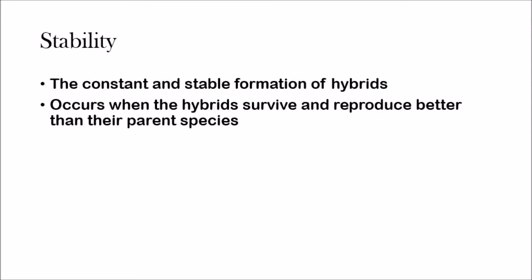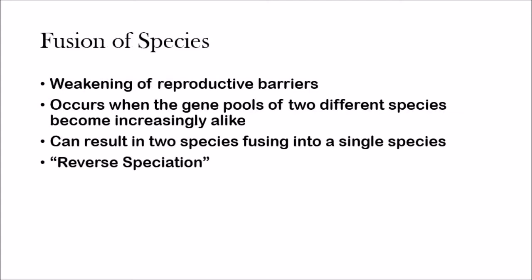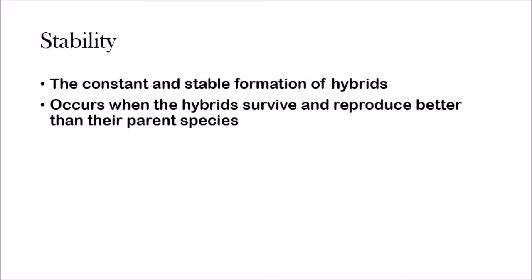The last thing that could possibly happen is stability. Stability is the constant stable formation of hybrids. It occurs when the hybrid survives and reproduces just as well as their parent species — it's like a less extreme version of fusion. Fusion means the hybrids completely take out the parent species, but stability is when all three species can survive on their own. You'll see this constant hybrid being formed in the middle and the two parent species also surviving, so now you have three species.